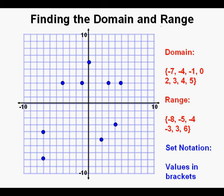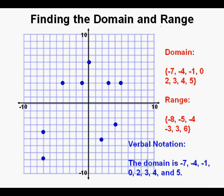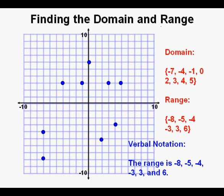Notation is a manner of describing things — in this case, describing numbers. There is also verbal notation. The domain of the relation is negative seven, negative four, negative one, zero, two, three, four, and five. And the range is negative eight, negative five, negative four, negative three, three, and six.